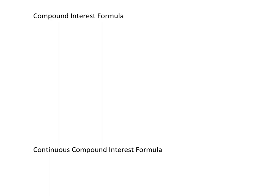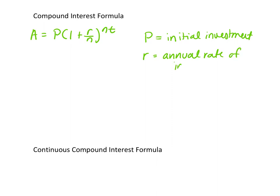The formula is A equals P times the quantity 1 plus r over n, raised to the power nt. Now we need to know what all these mean. So P is equal to that initial amount invested, r is the annual rate of interest. Interest is always given annually, but you could compound it multiple times a year. So n is the number of times it's compounded.